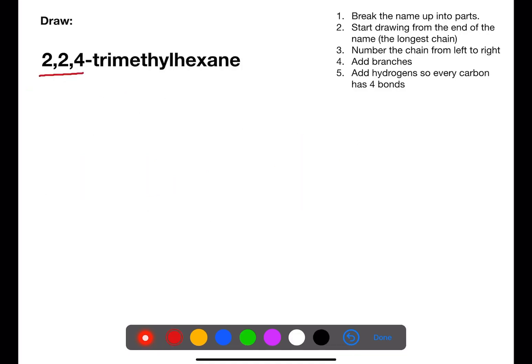In this second example we have three numbers, trimethyl, and then hexane. Hexane has six carbons and we number from left to right.